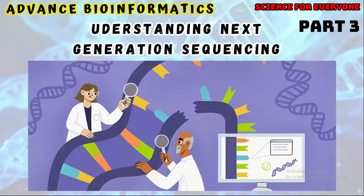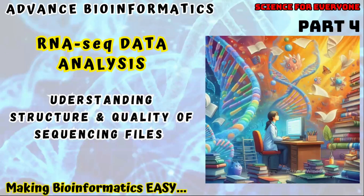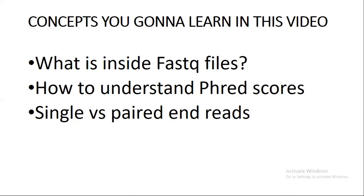In the previous video I talked about what is basically next generation sequencing, and we generated files after performing the sequencing technology. This part will cover: what is inside the FASTQ file — FASTQ files are those files generated after sequencing. Then how to understand Phred scores, which are basically the quality of the files and the quality of each and every read. Also a very major concept related to single versus paired-end reads.